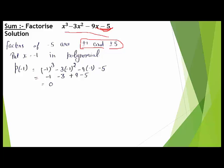We will substitute these factors one by one into the polynomial and find which one gives a value equal to 0. If we put a equals minus 1, we get: (−1)³ minus 3(−1)² minus 9(−1) minus 5, which equals minus 1 minus 3 plus 9 minus 5, and this equals 0. So by the Factor Theorem, since p(−1) = 0, then x minus (−1), that is (x + 1), is a factor.